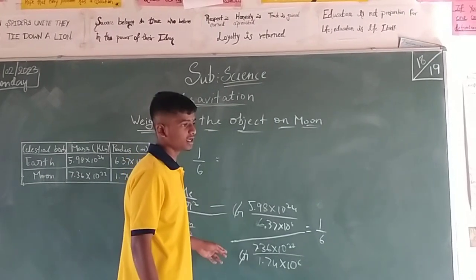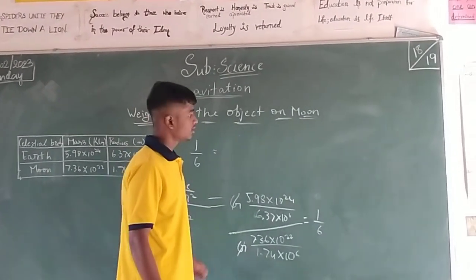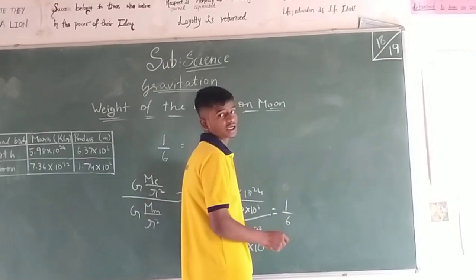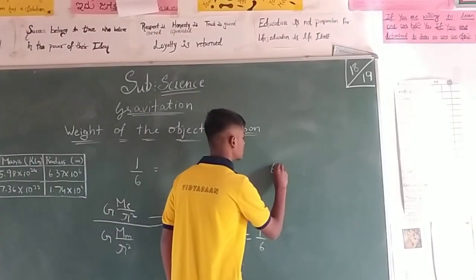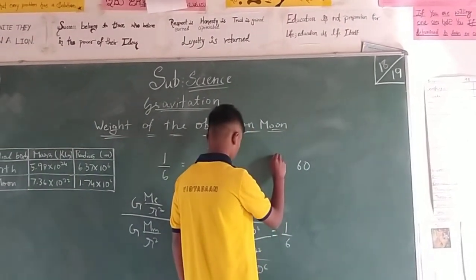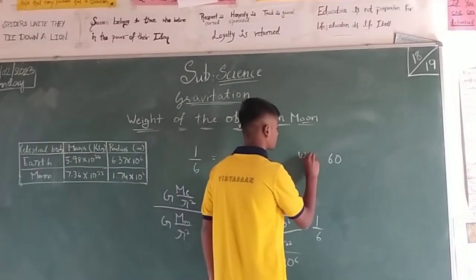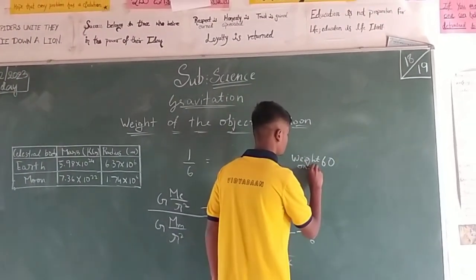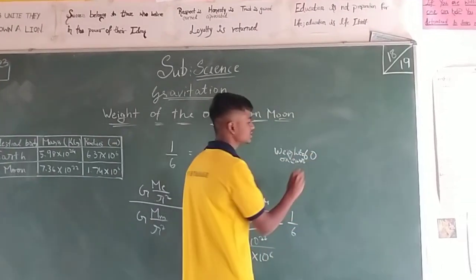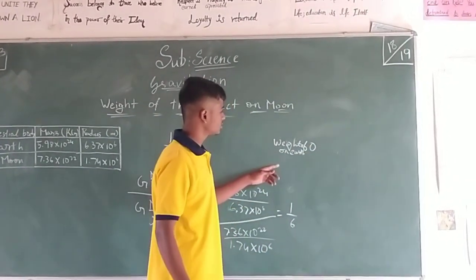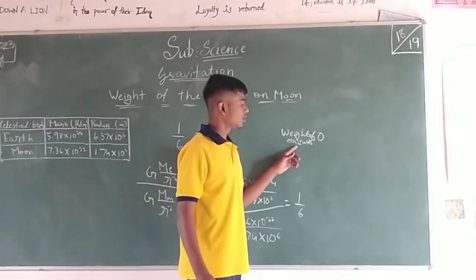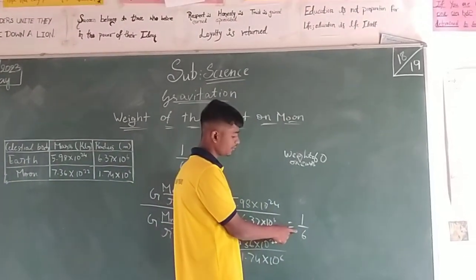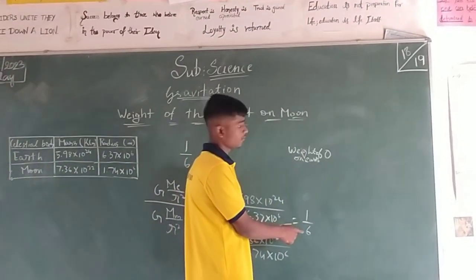If we solve this, we get 1 by 6. As we get 1 by 6, let us learn one example. The weight of the object on earth is 60 kg. What is the weight of this object on the moon? Now we have the formula of 1 by 6.